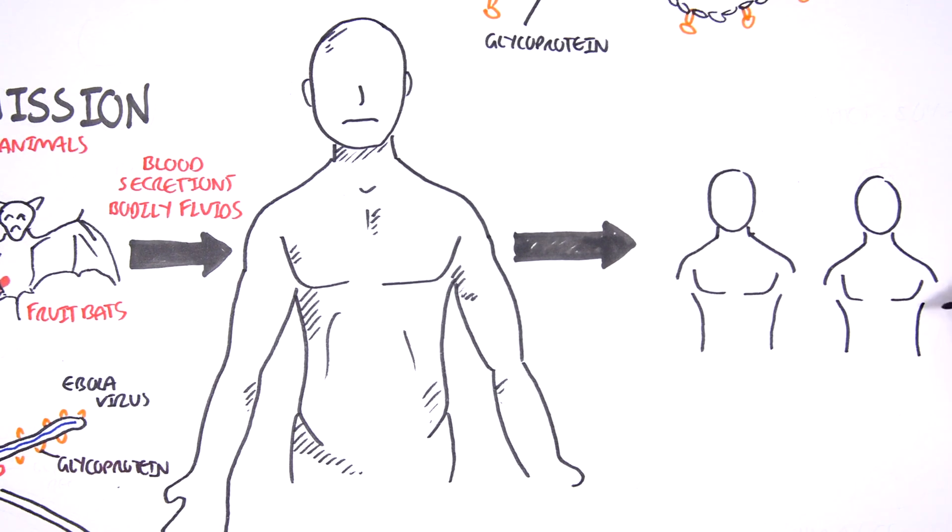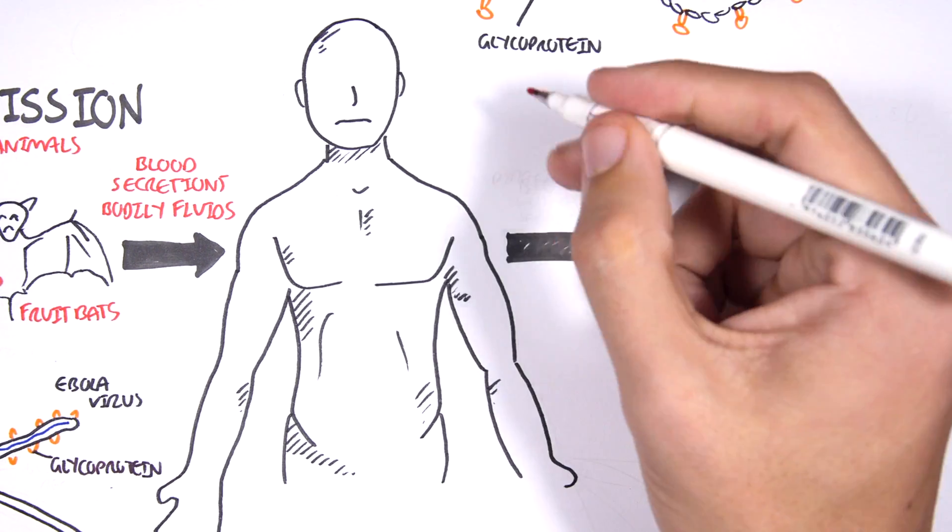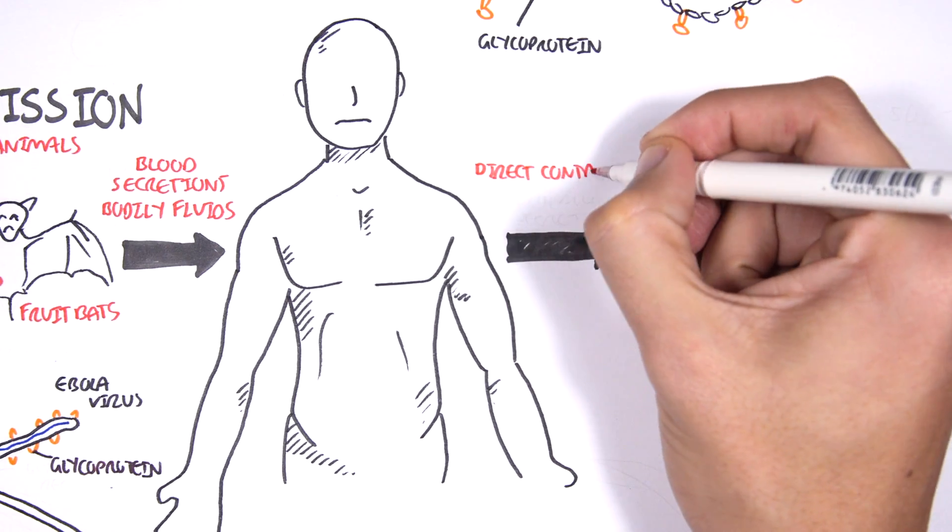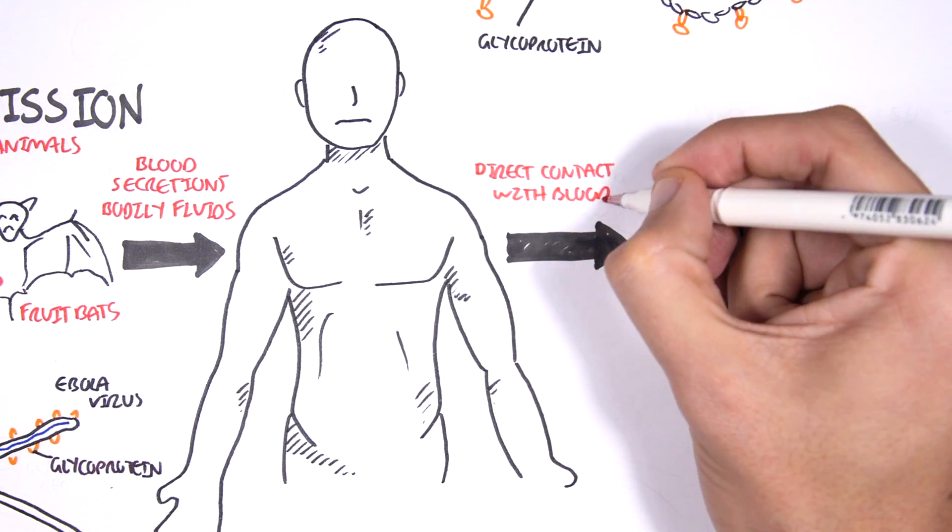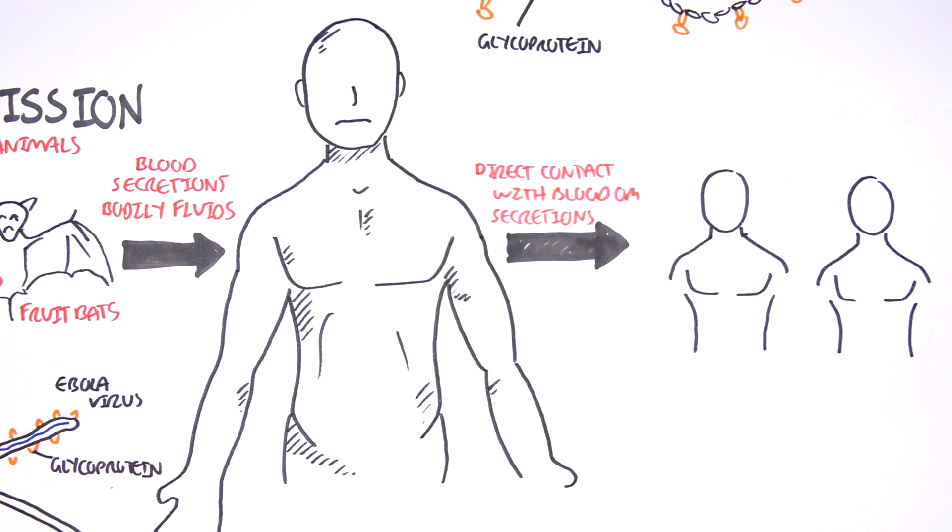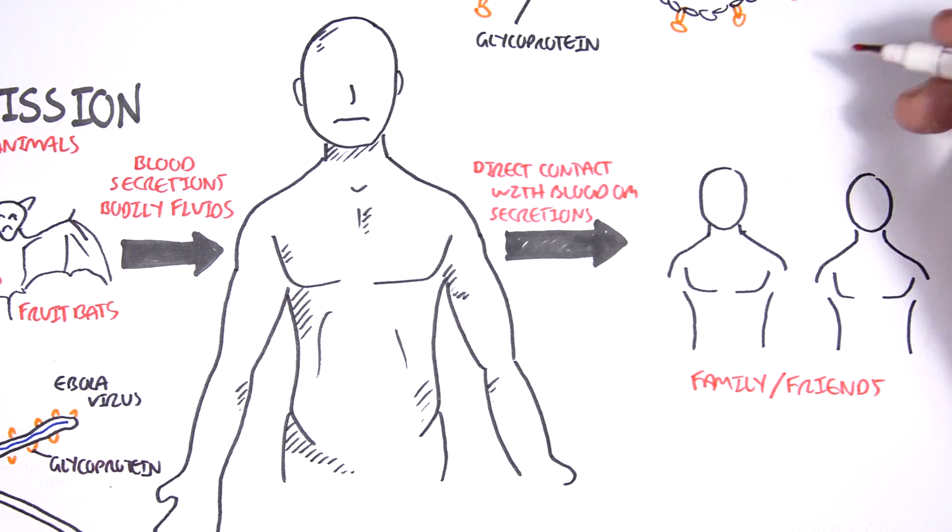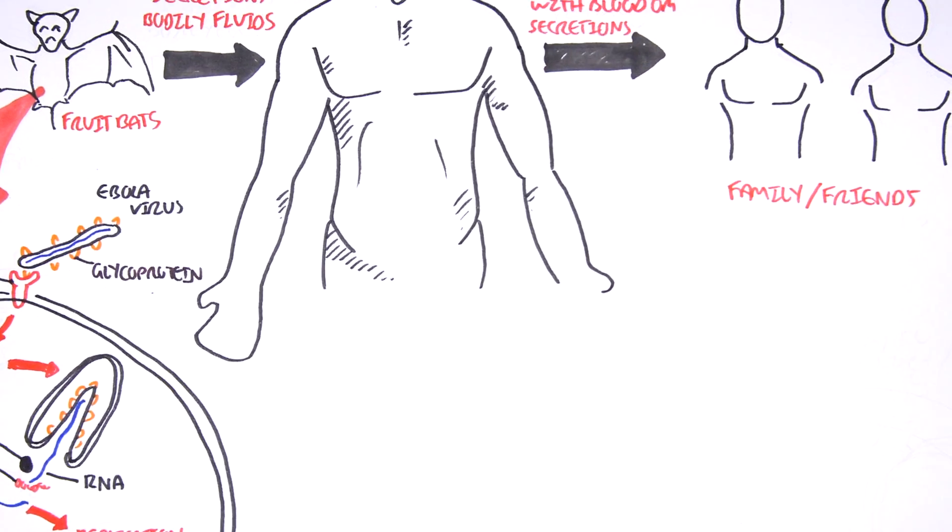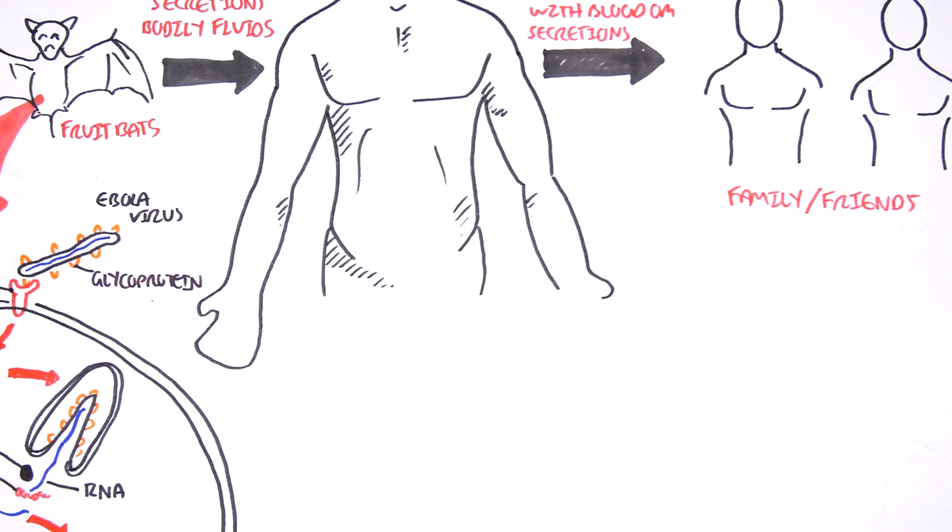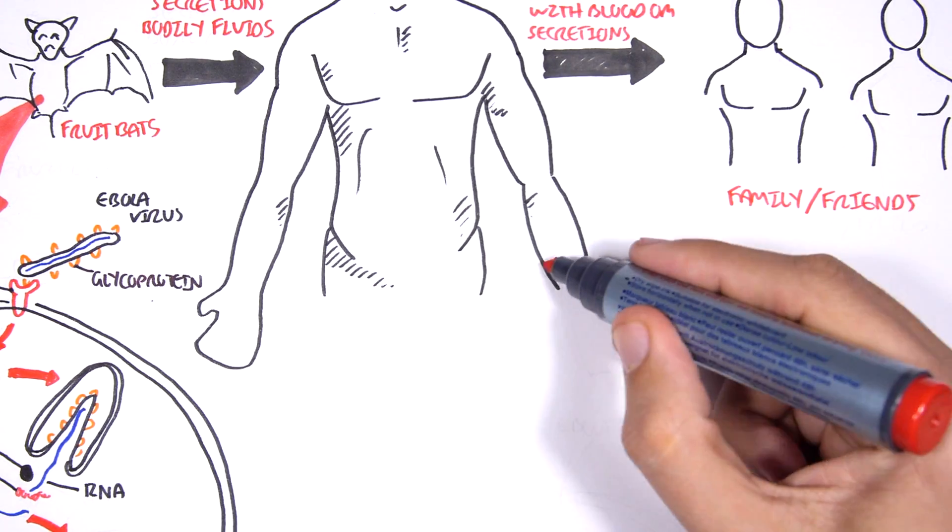The infection results from direct contact with blood or other bodily fluids. Family and friends of the infected individual are usually the most susceptible because they're the ones in most contact with the person. Mortality rates of Ebola infection are about 50 to 90 percent, so it's very fatal.